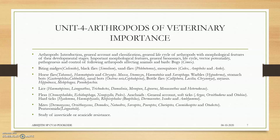In Unit 4, the arthropods of veterinary importance. We will be dealing with the general classification, general life cycle, arthropod morphological features, general bionomics, classification details, and the zoonotic aspects of many bugs, biting midges, black flies, bottle flies, horse flies, lice, fleas, mites, etc. We will also be studying insecticide and acaricide processes.